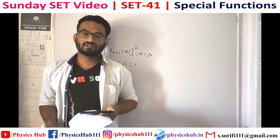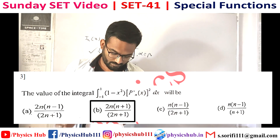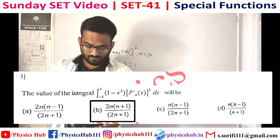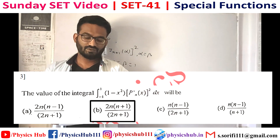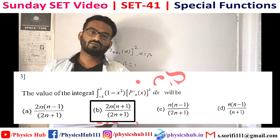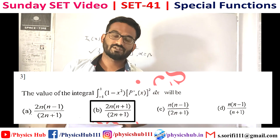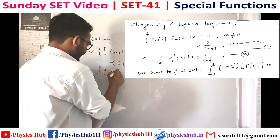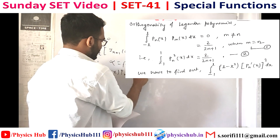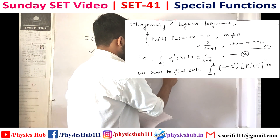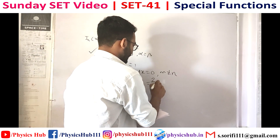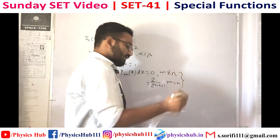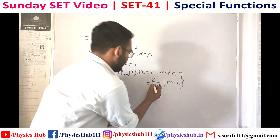The third question: the value of the integral from −1 to 1 of (1 − x²)[Pn'(x)]² dx equals what? To solve this, we utilize the orthogonality relation of the Legendre polynomial: the integral from −1 to 1 of Pm(x)Pn(x) dx equals 0 when m ≠ n, and equals 2/(2n+1) when m = n. This formula will be required.